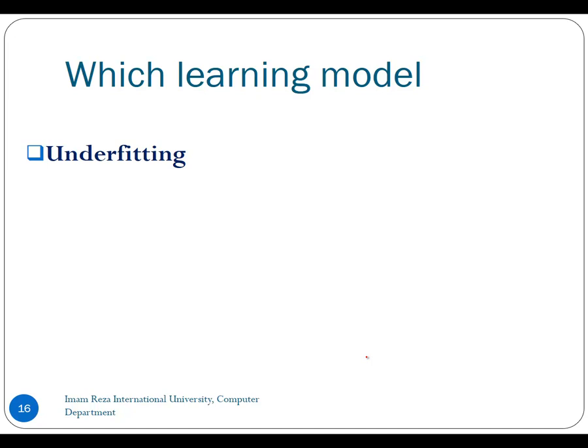There are two more concepts about the learning model. One is underfitting. Underfitting means that sometimes we select a model that is very simple and not suitable for the data we have. In this situation the training is not done well because the model is not suitable — we have underfitting when we use a simple model but the data needs a more complex model.